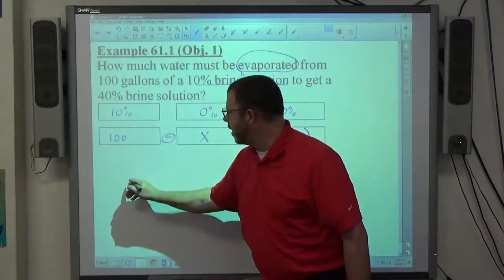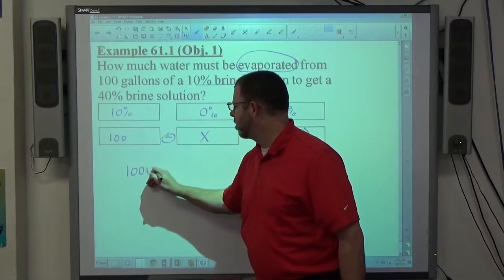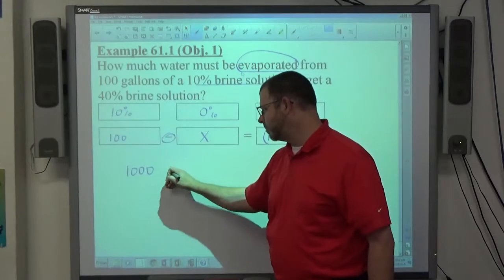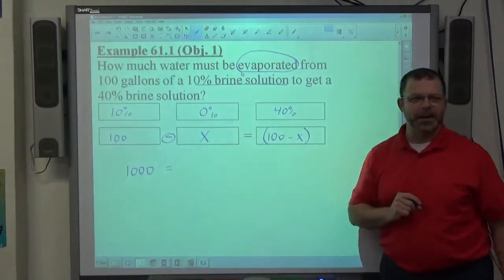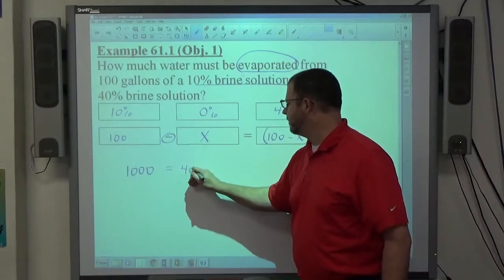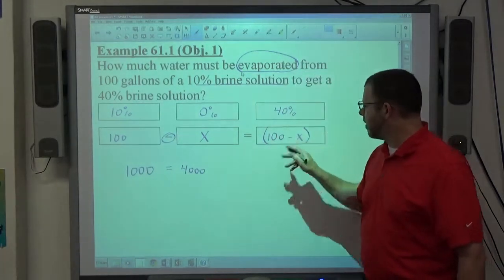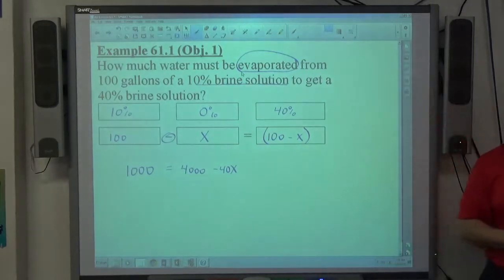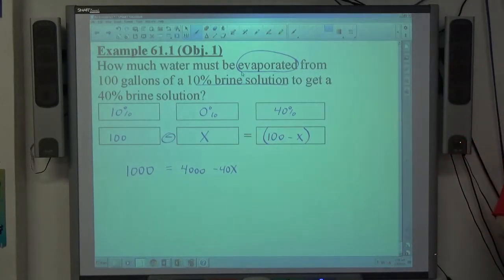So 10 times 100 is 1,000. We're subtracting 0X, better known as 0, so I'm not going to write it down. 40 times 100 is 4,000, and 40 times minus X is minus 40X. So just like that, we have a nice equation that's pretty easy to solve.